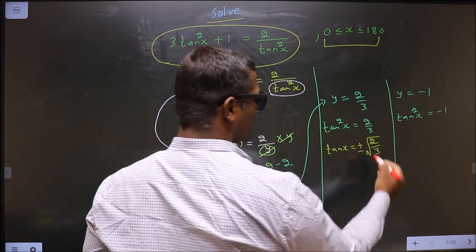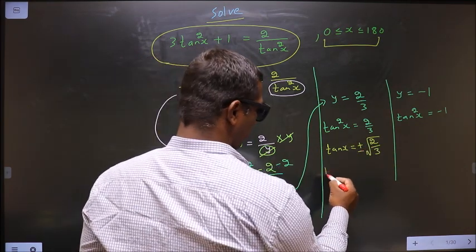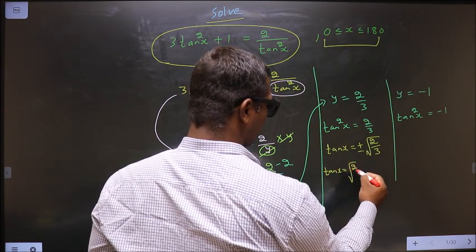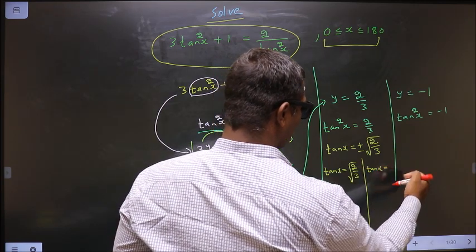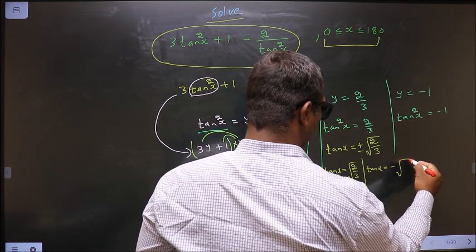And here you need to consider both plus and also minus. So tan x equal to plus root 2 by 3 or tan x equal to minus root 2 by 3.